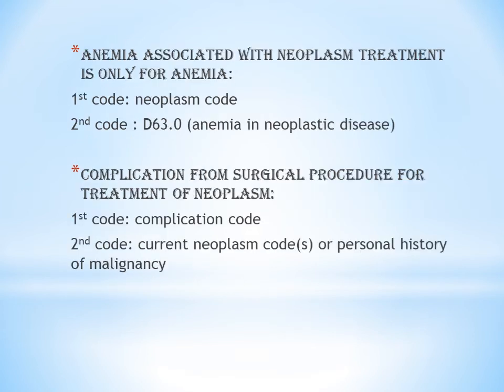The next guideline is anemia associated with neoplasm. In the previous guideline we said there is an exception for anemia, and that exception is discussed here. If a neoplastic patient has anemia due to neoplasm and comes for treatment of anemia, you first code the neoplasm and second code D63.0 — anemia in neoplastic disease.